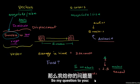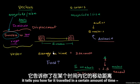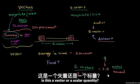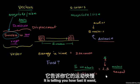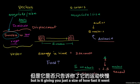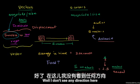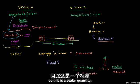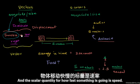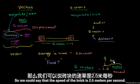So my question to you: this 2.5 meters per second tells you how far something traveled in a certain amount of time. Is this a vector or a scalar quantity? It's telling you how fast it went, but is it giving you the size of how fast, or is it also giving you direction? Well, I don't see any direction here, so this is a scalar quantity. The scalar quantity for how fast something is going is speed. So the speed of the brick is 2.5 meters per second.